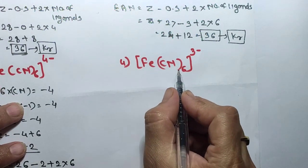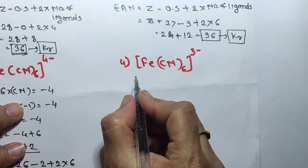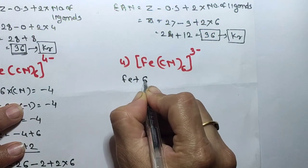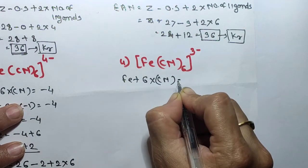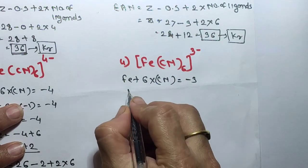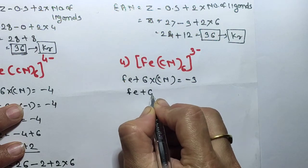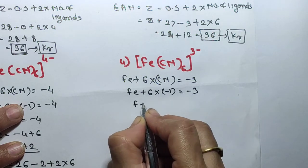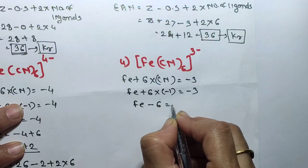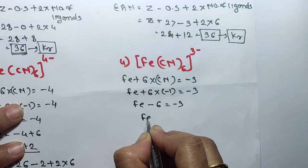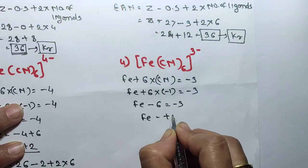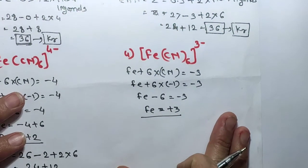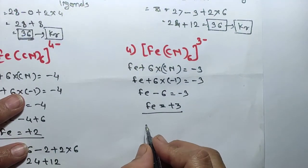Now let's solve Fe(CN)₆³⁻. First, find iron's oxidation state: Fe plus 6 into cyanide's oxidation state of minus 1 equals minus 3. Therefore Fe minus 6 equals minus 3, so Fe equals minus 3 plus 6, giving oxidation state plus 3. Iron here has a plus 3 oxidation state. Now calculate the effective atomic number.